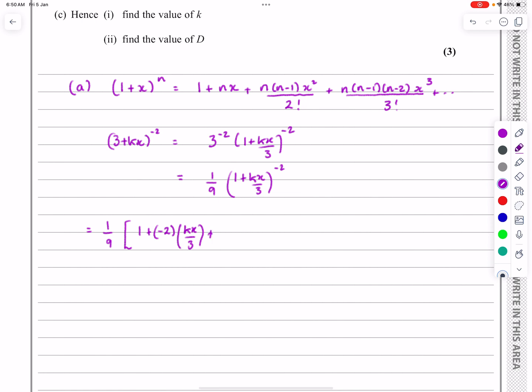And then let's get into a rhythm of saying it. So it's n, n minus one, kx over three squared, all over two factorial.